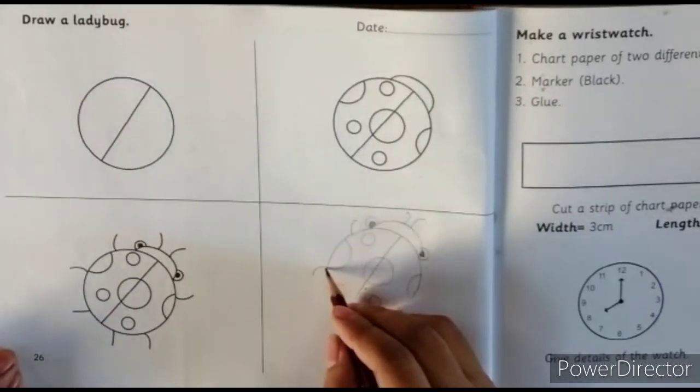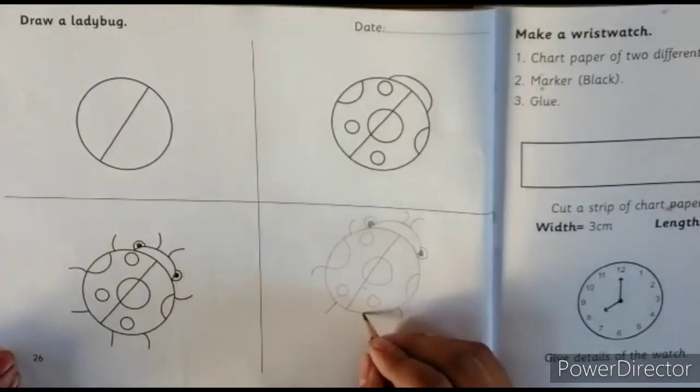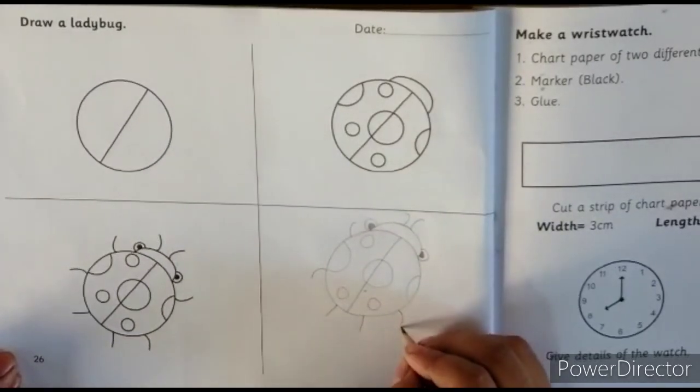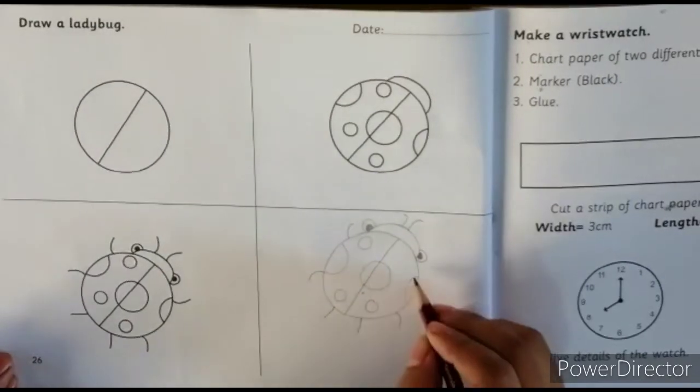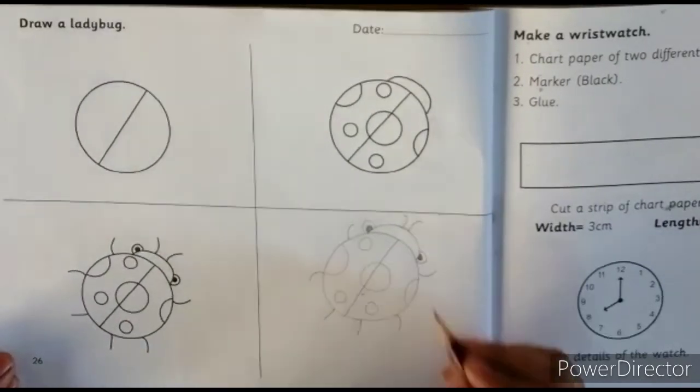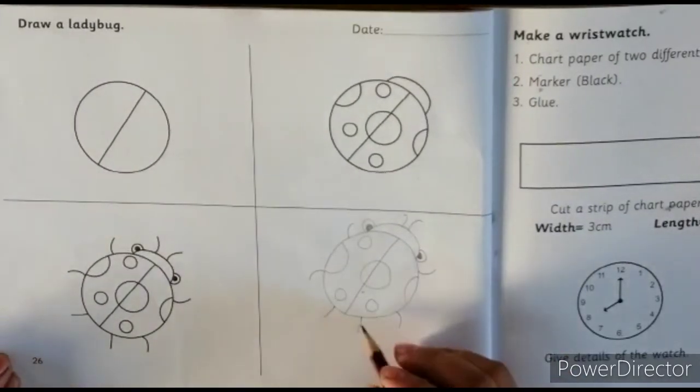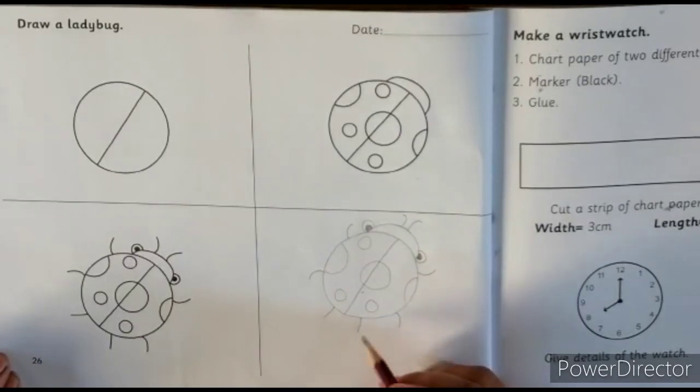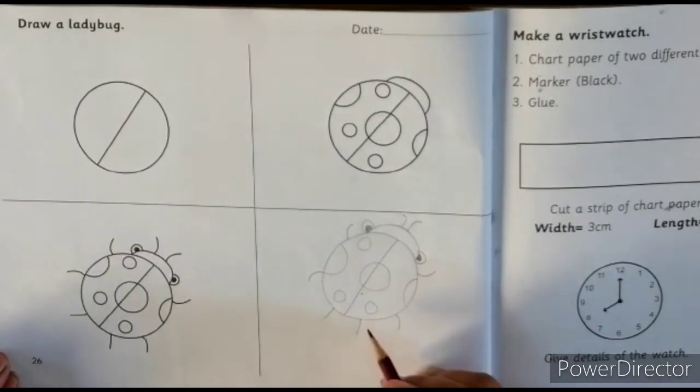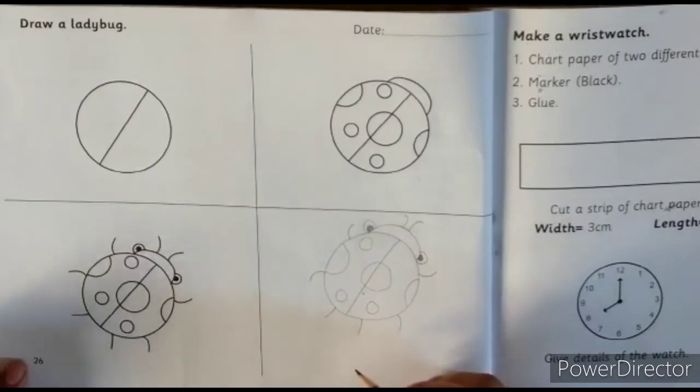One semicircle, one semicircle, two straight lines. Then again we make this semicircle. So you have to make a ladybug, you have to make this semicircle and you have to make this semicircle.